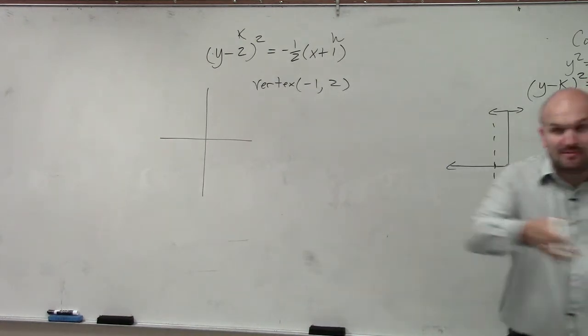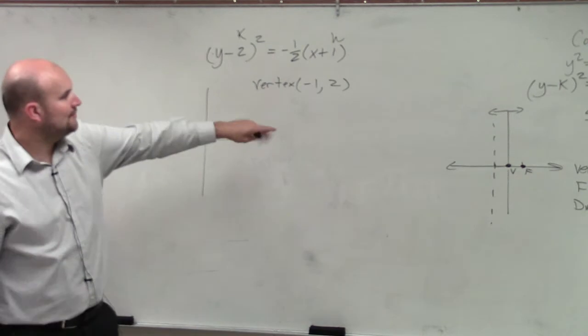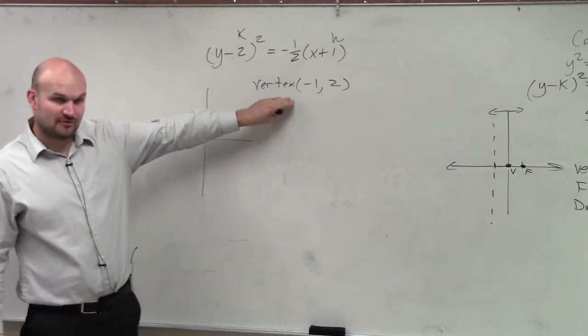Remember when it was plus 2, that means you're shifting to the left. You're just actually going to the negative. So your vertex is the opposite for both of them.